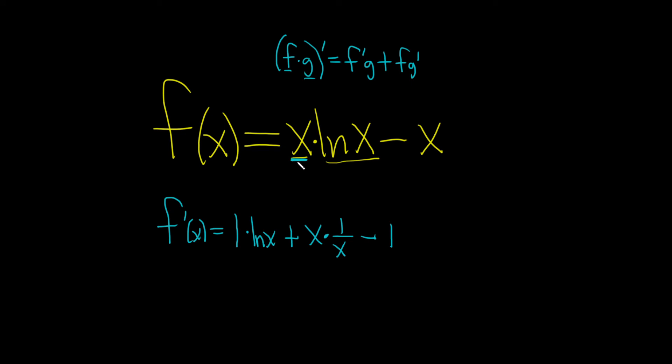Let's check that. The derivative of the first is 1 times the second, which is ln x, plus the first, which is x, times the derivative of the second, which is 1 over x. That's the product rule. Minus, and then the derivative of x is 1.